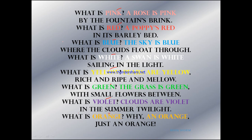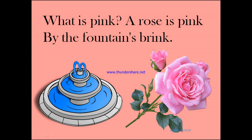The first two lines of the poem are 'What is pink? A rose is pink.' See in this picture — you have a pink rose. So what is pink? A rose is pink. And where is this rose? By the fountain's brink. Brink means at the side, so this pink rose is by the side of the fountain. These are the first two lines.